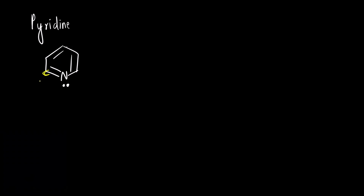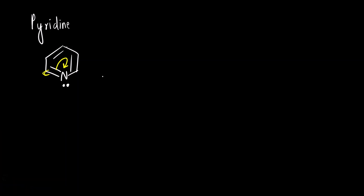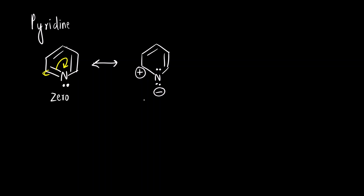Now if you compare carbon and nitrogen, nitrogen is more electronegative. So we will move the electrons towards nitrogen like this. Don't forget the resonance arrow. Nitrogen now has two lone pairs and a negative charge, with a positive charge on the adjacent carbon. The overall charge here is zero, and here also the overall charge is zero — plus and minus one gives zero overall.